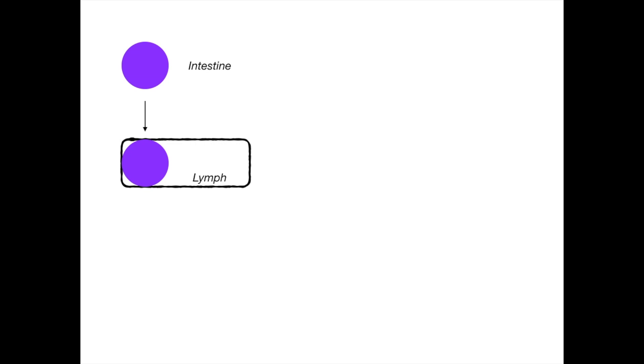Next, from the intestine, the chylomicron, depicted here in purple, will enter the lymphatic system. Okay, so it's in the lymph. The lymph is depicted on this slide as this rectangular black area. So the chylomicron has made it to the lymph.